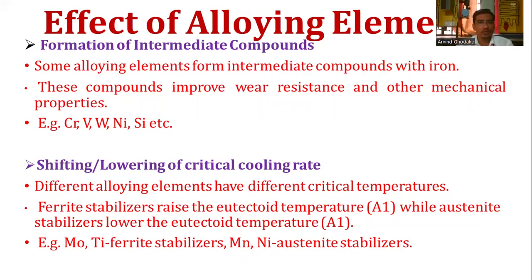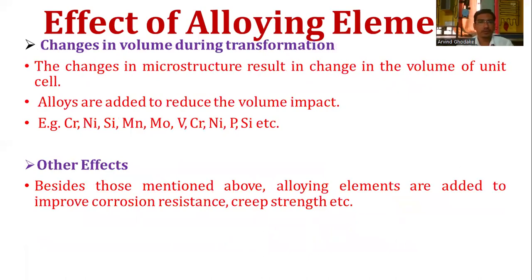Another effect is the shifting and lowering of the critical cooling rate. Different alloying elements have different critical temperatures. Ferrite stabilizers raise the eutectoid temperature A1, while austenite stabilizers lower it. For example, molybdenum and titanium are ferrite stabilizers, while manganese and nickel are austenite stabilizers. Additionally, changes in microstructure result in changes in the volume of the unit cell; elements like chromium, nickel, silicon, manganese, molybdenum, vanadium, and phosphorus are added to reduce volume changes.